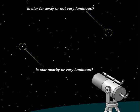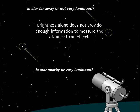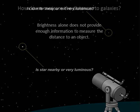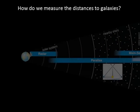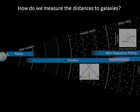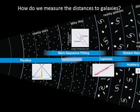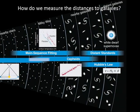This is our problem, summed up here. Brightness alone does not provide enough information to measure the distance to an object. A bright star could be bright because it's nearby, or it could be bright because it's intrinsically luminous. To determine astronomical distances, we depend on a chain of methods in which each step allows us to measure greater distances in the universe.